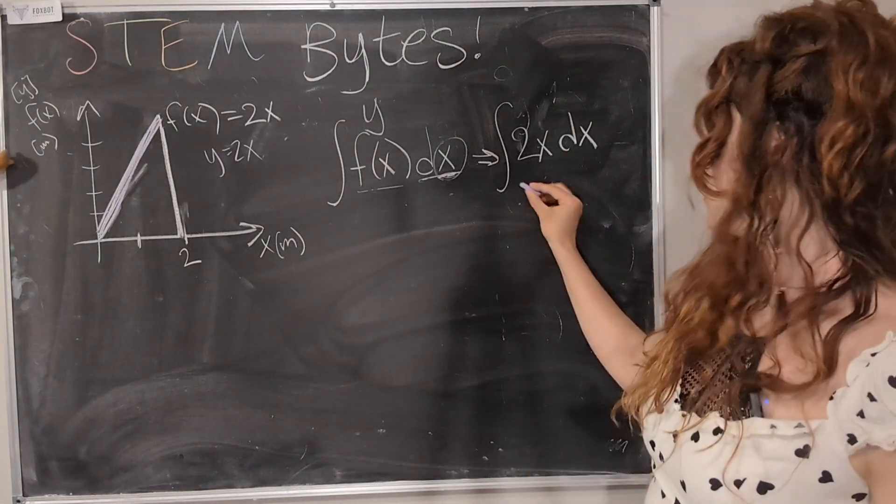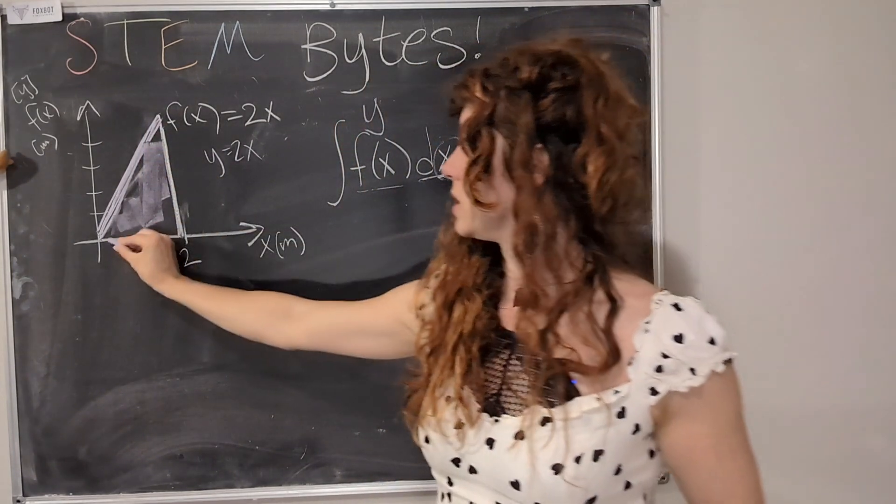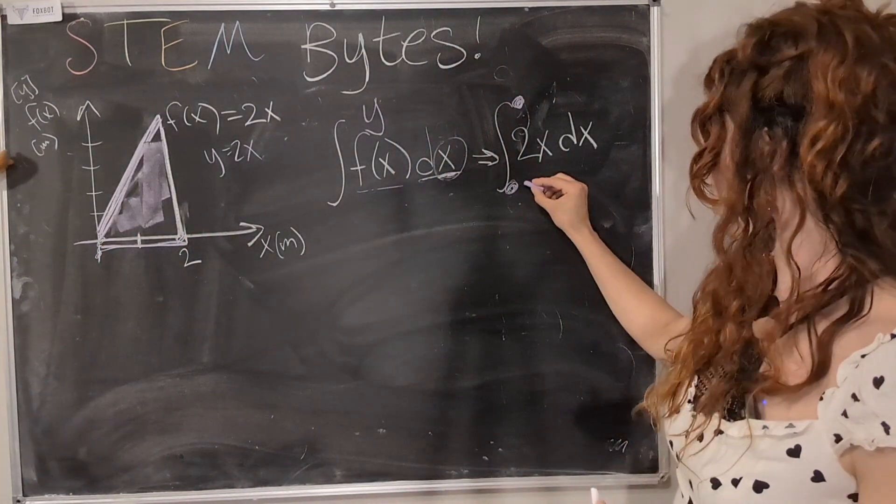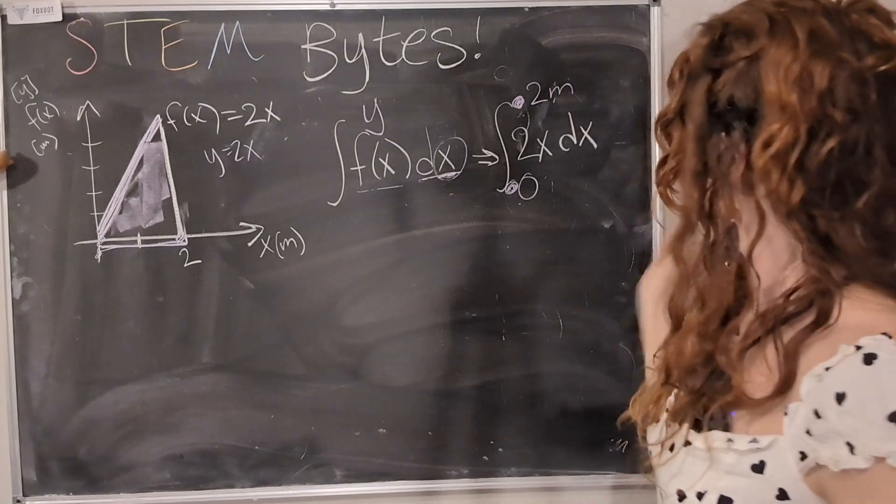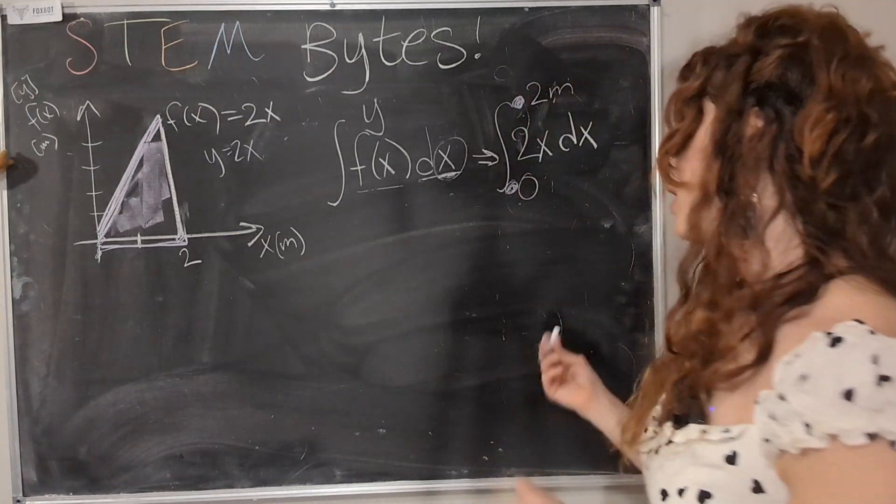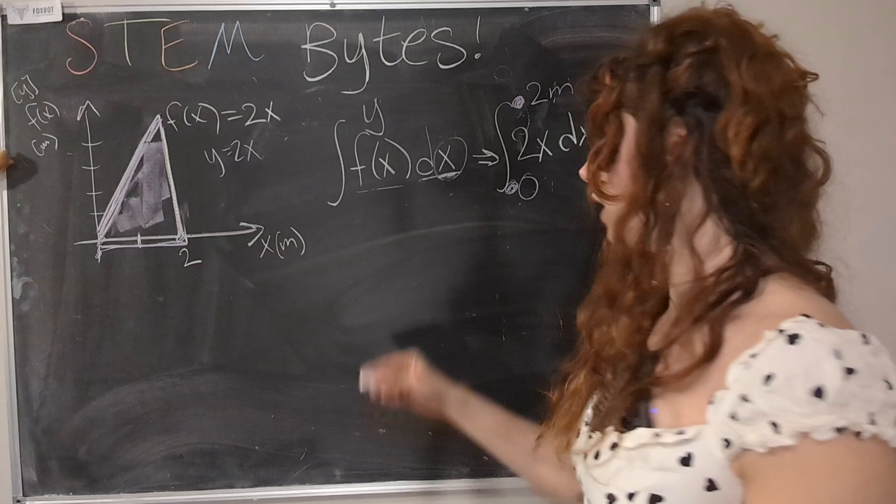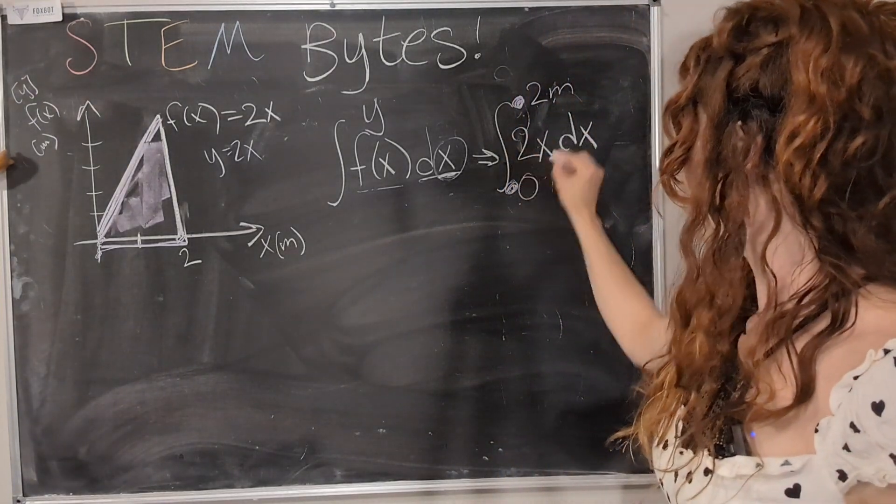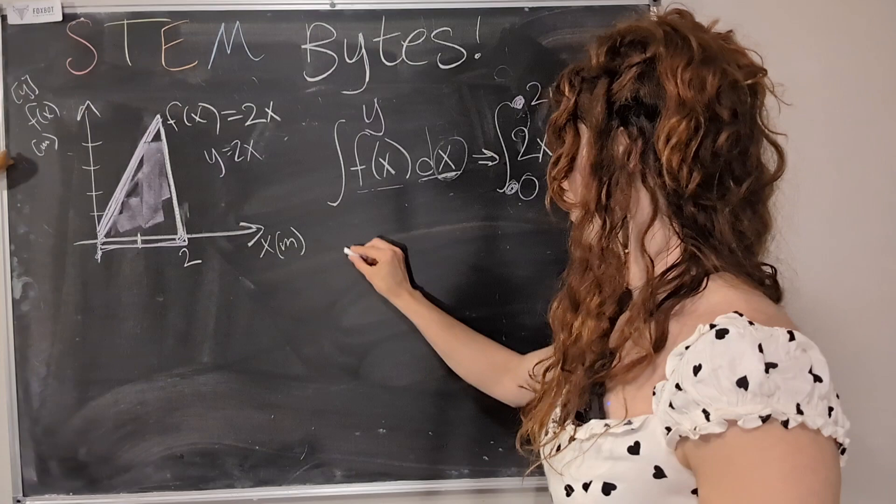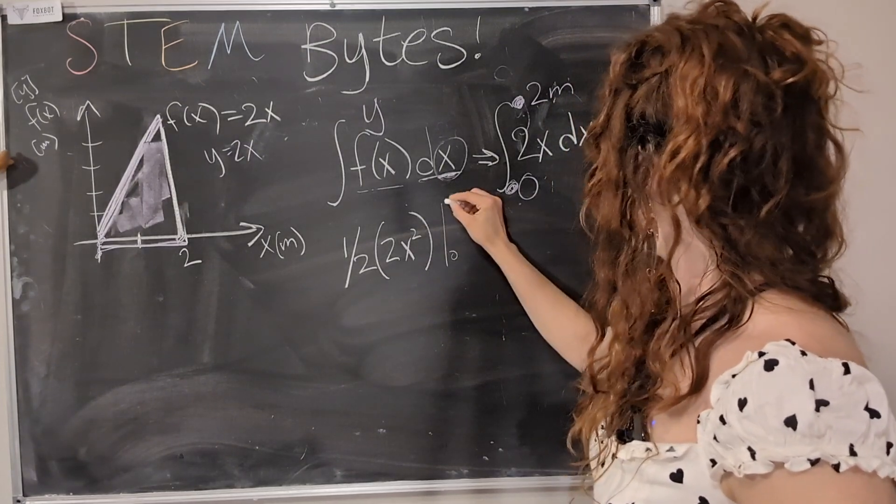And so we put 0 here, we put 2 meters here. And now we can take the integral. And so this is where there is a little bit of memorization. So sorry. But it's really about memorizing the derivative part. And those rules, they will come with practice. And so what you do is you apply derivative in reverse. So if you think about how would you get 2x if you apply it in reverse? You're like, wait, what? That's really funky. I don't get it. So what you end up with is 1 half times 2x squared from 0 to 2 meters.